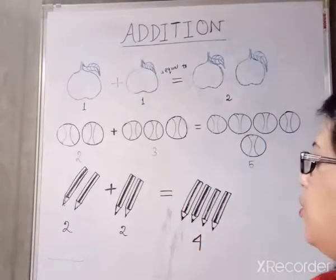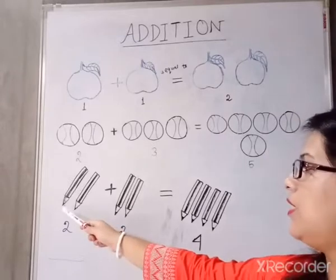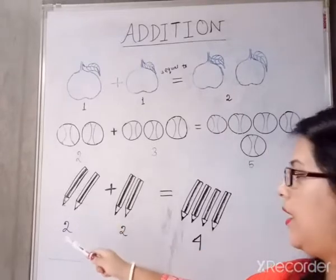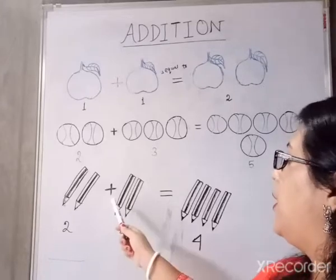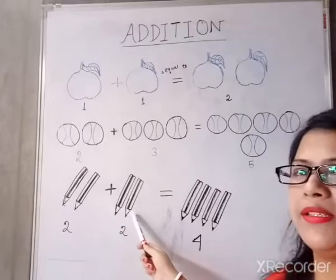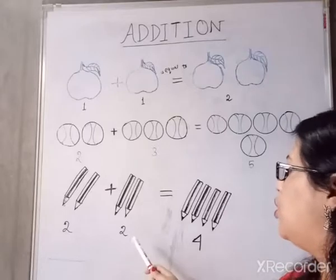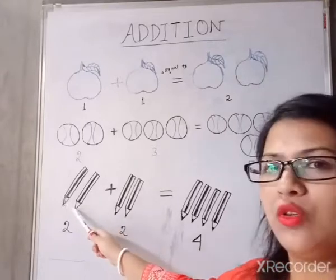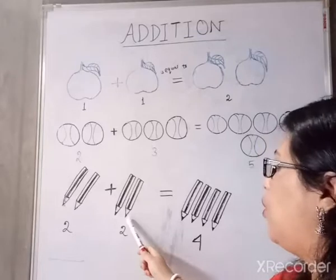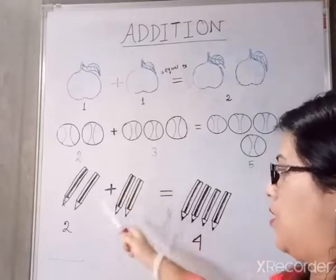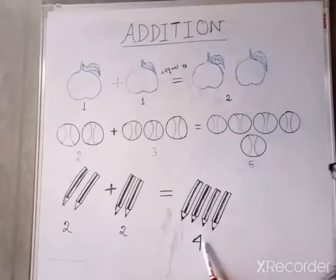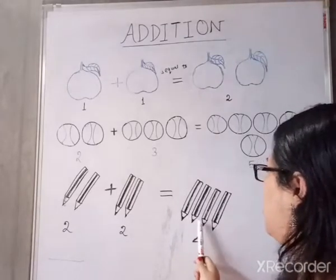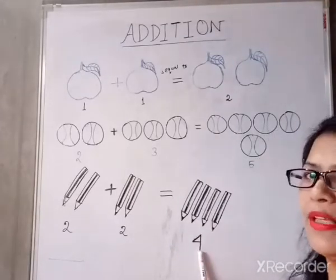Here I have drawn 2 pencils and I have wrote down here the number 2. Here for the same thing I have drawn 2 pencils and I have written down 2. 2 pencils plus 2 pencils. Now we will count them together. 1, 2, 3, 4. Here can you see? 4. 1, 2, 3, 4. 4 pencils.